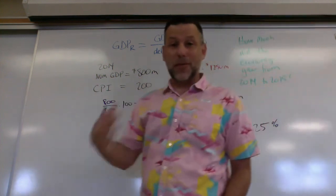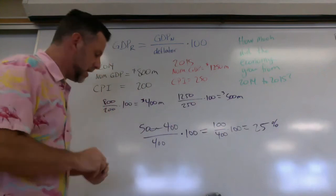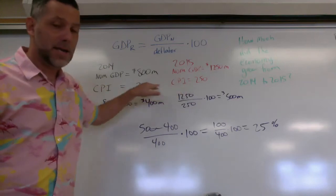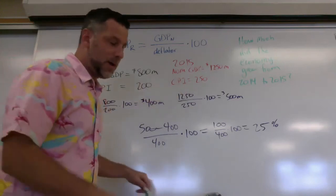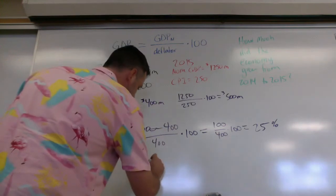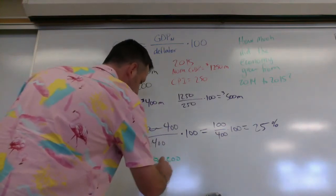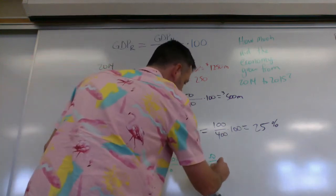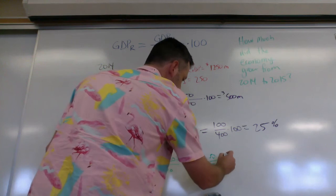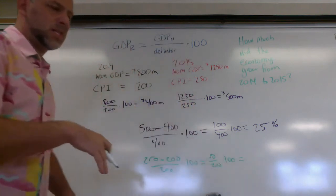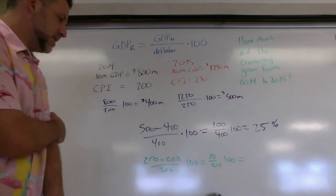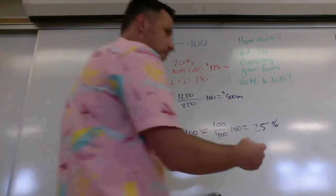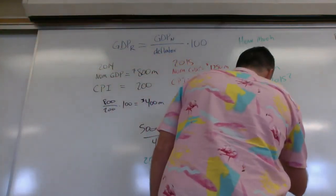Now, if I wanted to know how much inflation there was, how much did prices change over that time, I could use this exact same growth formula, but I could just plug in my CPIs. When I plug in my CPIs, I would do the same thing, new minus old over old times 100. I'd end up with 50 over 200 times 100. 50 over 200, that's going to be one-fourth. So one-fourth times 100, we end up with 25% again.